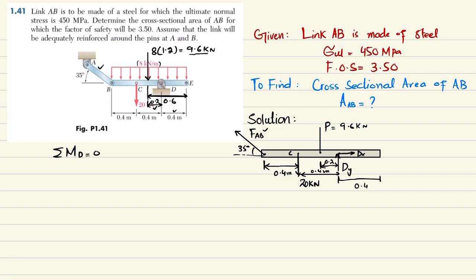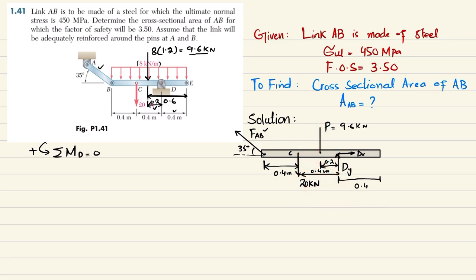Applying the equilibrium condition — sum of all moments about point D equals zero, taking counterclockwise as positive — the first moment is due to force P with perpendicular distance 0.2 meters producing clockwise rotation (positive). The second moment is due to the 20 kilonewton force with perpendicular distance 0.4 meters, also counterclockwise (positive). The third moment is due to the vertical component of F_AB, which is F_AB × sin(35°), with perpendicular distance 0.8 meters, producing clockwise rotation.